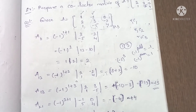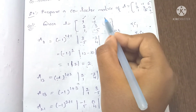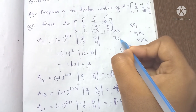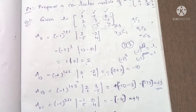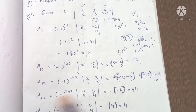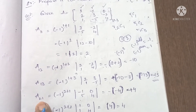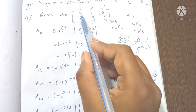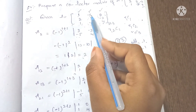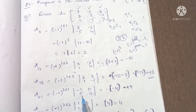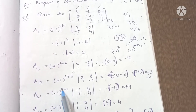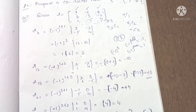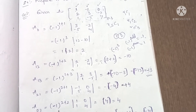Next, cofactor C21 for element 2 in second row, first column. C21 = (-1)^(2+1) times the minor. Eliminating row 2 and column 1, the remaining submatrix is [2, 1; -2, 4]. Minor = 2×4 minus 1×(-2) = 8 minus (-2) = not this; we get minor as -4. Since (-1)^3 = -1, cofactor C21 = -1×(-4) = 4. Next, C22 for element 3 at row 2, column 2: C22 = (-1)^(2+2) = 1 times the minor.